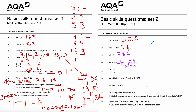Question five: two-thirds divided by four-fifths. Using the KFC method — Keep, Flip, Change. Keep the first fraction, flip the second (take the reciprocal), and change the operation to multiplication. So it becomes 2/3 times 5/4. Two times five is 10, and three times four is 12, giving 10/12, which simplifies to five sixths.